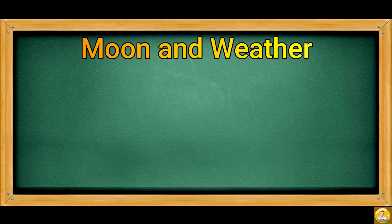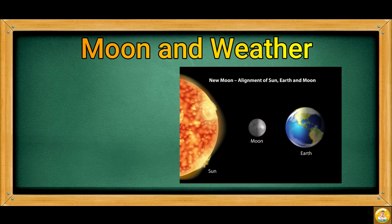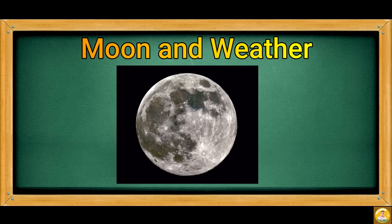Moon and weather: when the sun, moon, and Earth line up, and the moon is at its perigee — or closest to the Earth — you can expect lower temperatures. This is due to the combined gravitational pull of the moon and sun. During a full moon, it creates a bulge in the ocean.